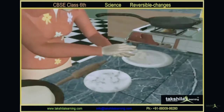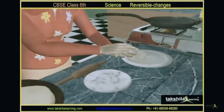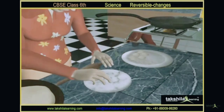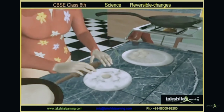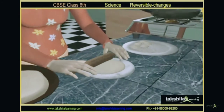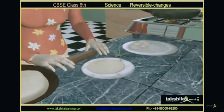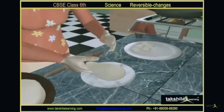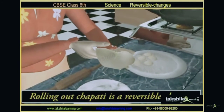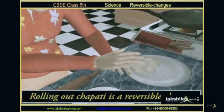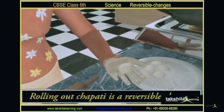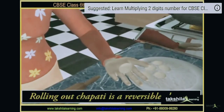Rolling of chapati is another example. If your mummy is rolling a chapati but she doesn't like the shape, she will demold it and make another chapati. That is also a reversible change — she can demold it again. So, rolling out chapati is a reversible change.